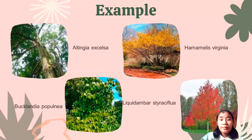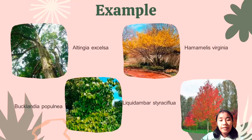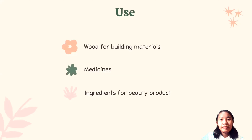The examples of this family are Altingia excelsa or Rasamala, Hamamelis virginiana, Bucklandia populnea, Liquidambar, and Styrax. The uses of this family include wood for building materials, medicines, ingredients, and beauty products.